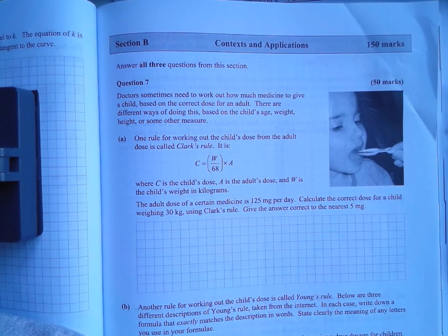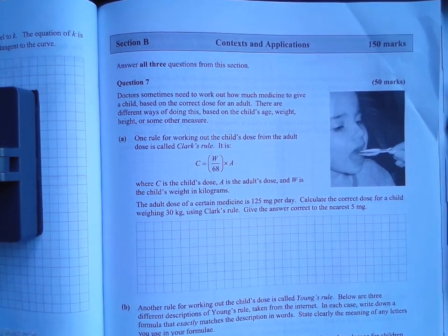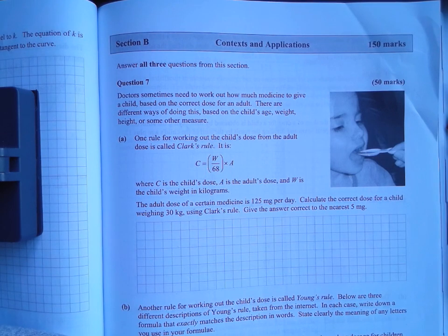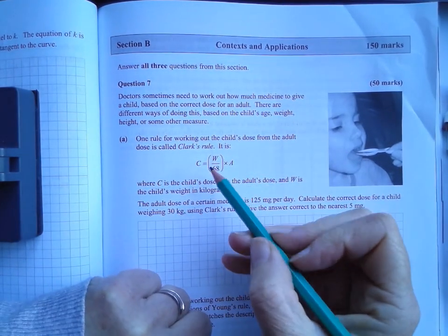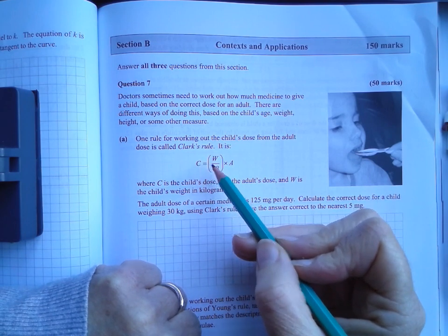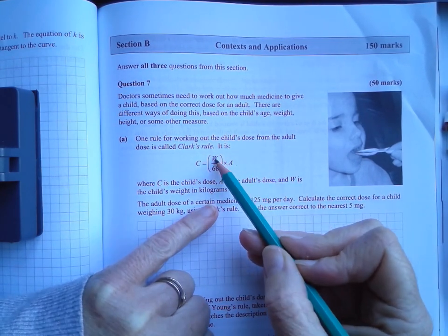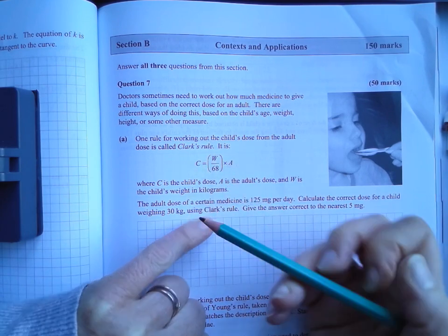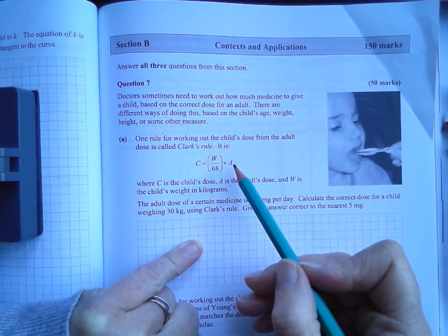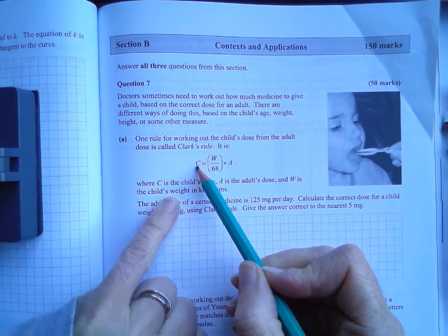In a way, the context doesn't matter too much. They're trying to be clever, I think, and it can make it seem harder. So a lot of that language there doesn't actually matter. One rule for working out the child's dose from the adult dose is called Clark's rule. You can see here it says C is equal to W over 68 times A. So W is the weight, A is the adult dose, and C is the child's dose.